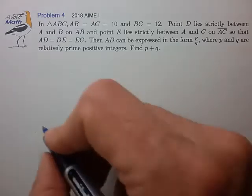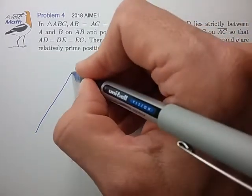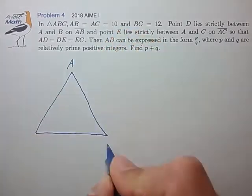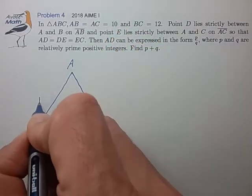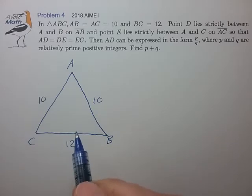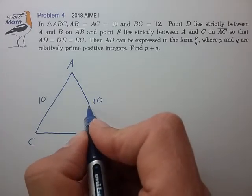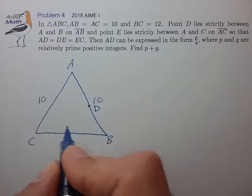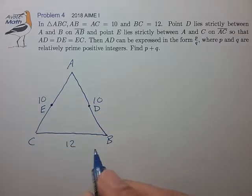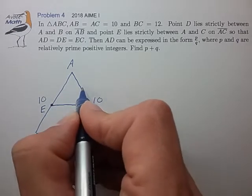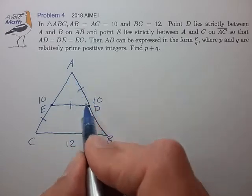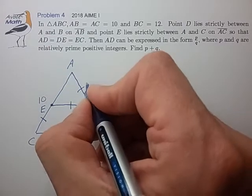The first step is just to draw this out. So we have a triangle ABC with side lengths 10 and 12. That's not quite to scale, but it should still work. We have point D on side AB and point E on side AC, such that these three line lengths are equal. That's the length we need to find, so let's call that length X.